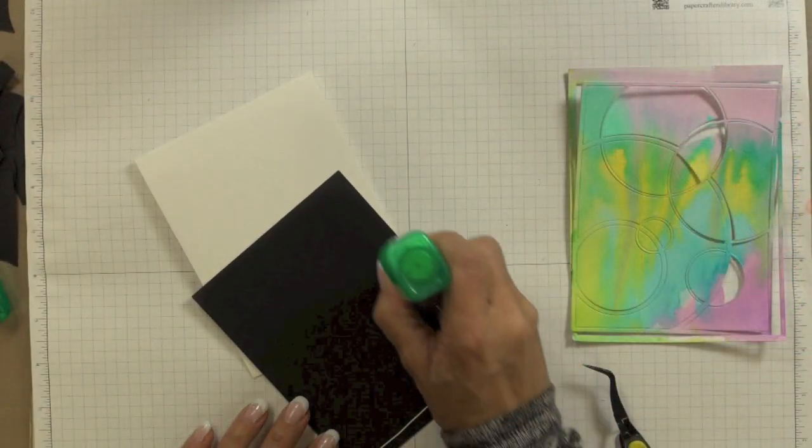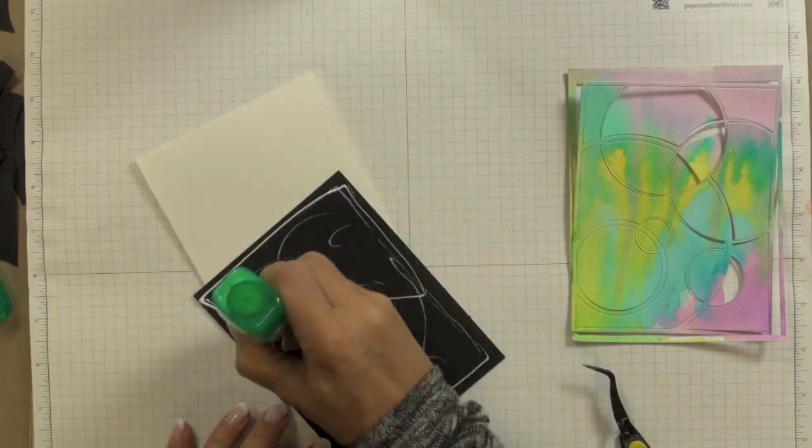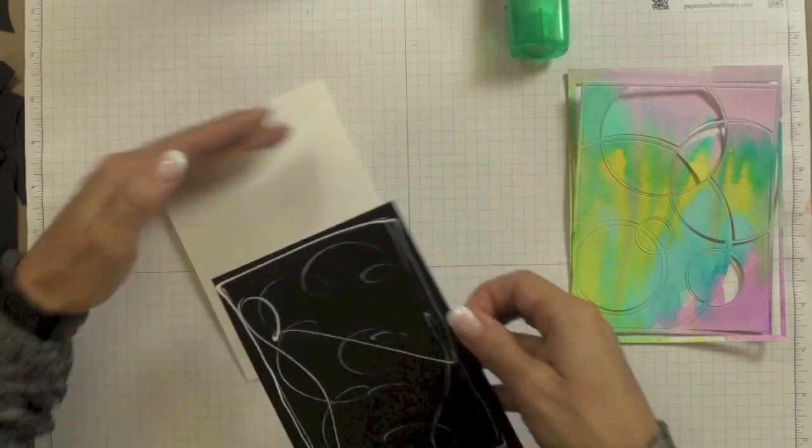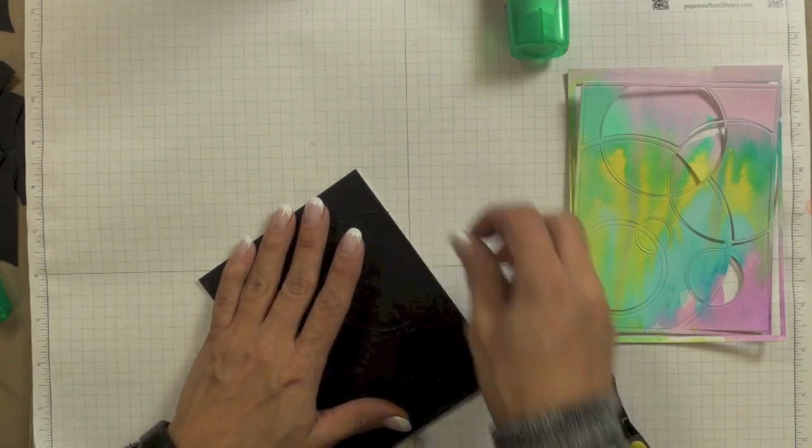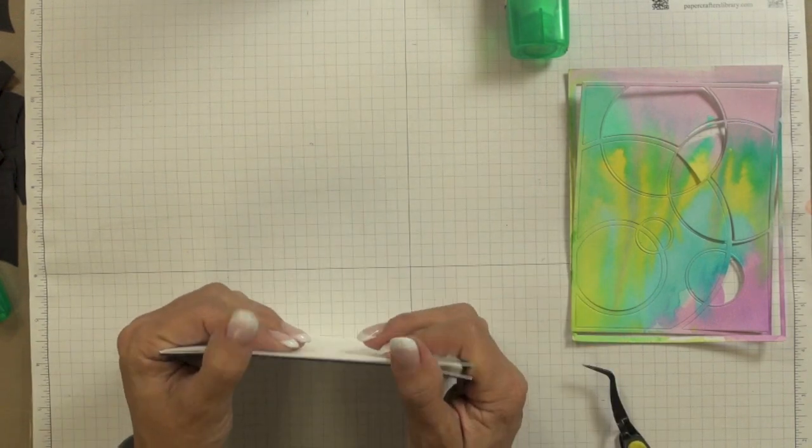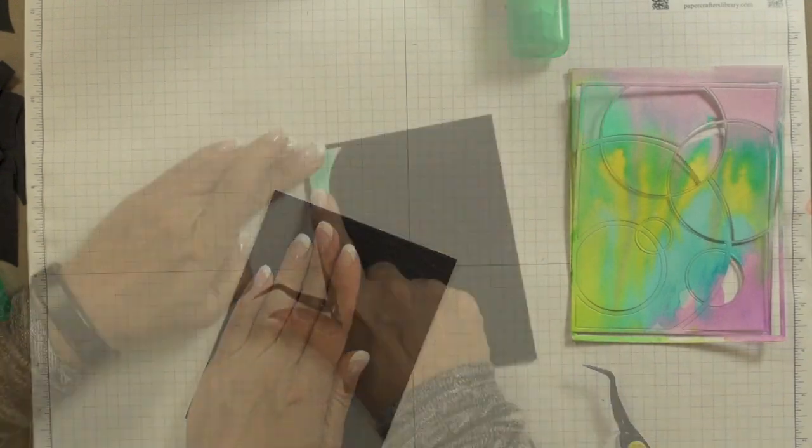Now at this point I decided to adhere my panel to the front of my card and I created my card out of a four and a quarter by eleven inch piece of a hundred and twenty pound Simon Says Stamp cardstock which I scored at five and a half inches and folded in half to create an A2 size card and I stuck my panel down using Tombow mono multi-liquid glue.